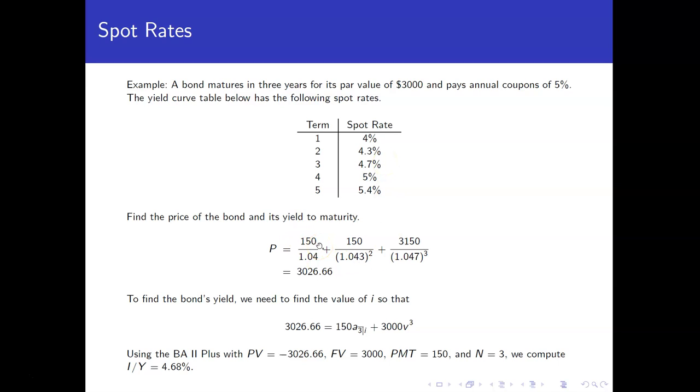At time 1, we get a $150 coupon. We'll use the 4% spot rate to discount. At time 2, we get another $150 coupon. We'll use the 4.3% spot rate to discount.